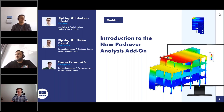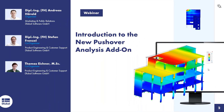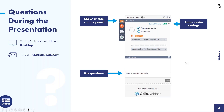Thank you for your introduction. We can switch off our webcams so that the attendees can see the full screen. For attendees participating for the first time: you can show or hide the control panel with the arrow here, and then you can enter a question. We will answer you. If you don't get an answer during the webinar because there are too many questions, you will get an email afterwards. You can also watch the entire webinar and then email questions to info@dlubal.com.